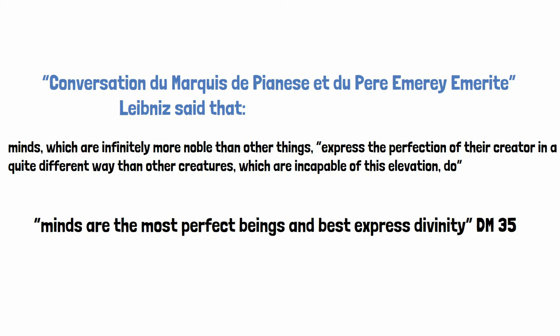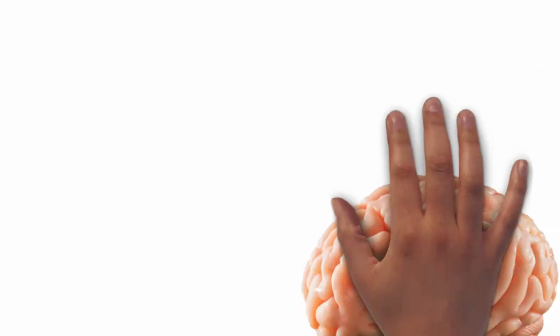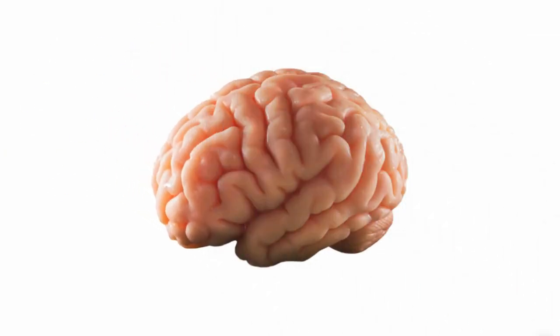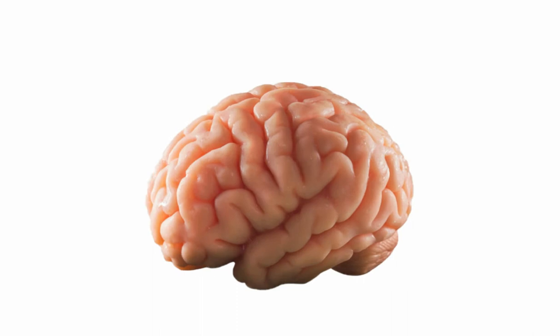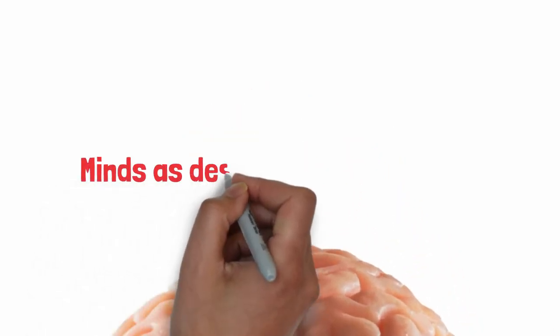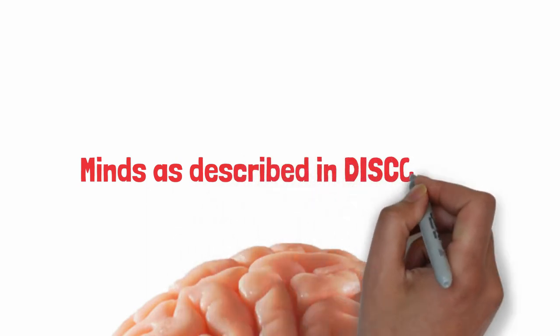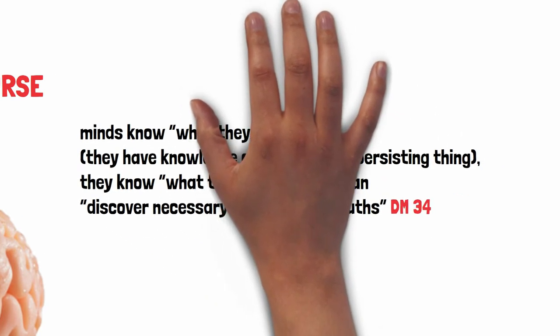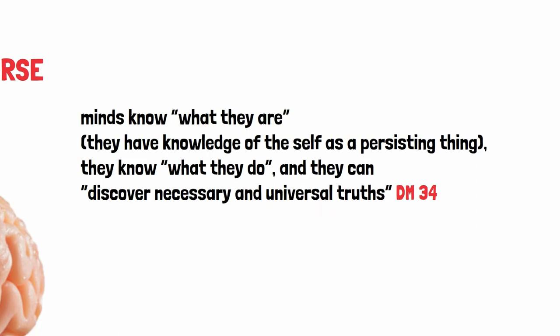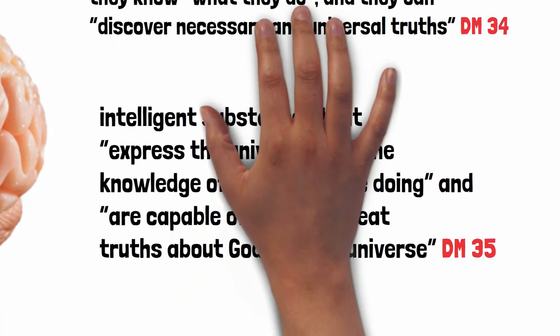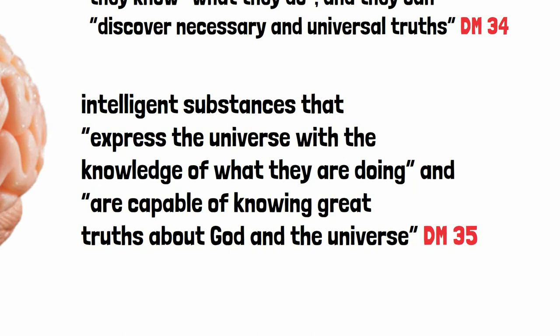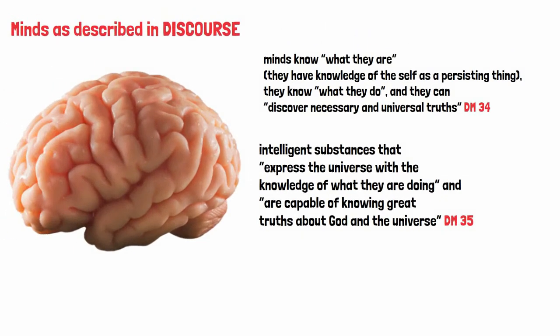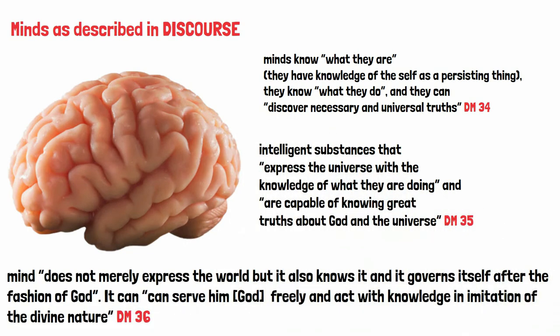The central ways in which minds are said, in the discourse, to be particularly like God all involve knowledge. Thus in DM 34, we are told that minds know what they are, they know the self as a persisting thing, they know what they do, and they can discover necessary and universal truths. In DM 35, minds are described as intelligent substances that express the universe with the knowledge of what they are doing and are capable of knowing great truths about God and the universe.